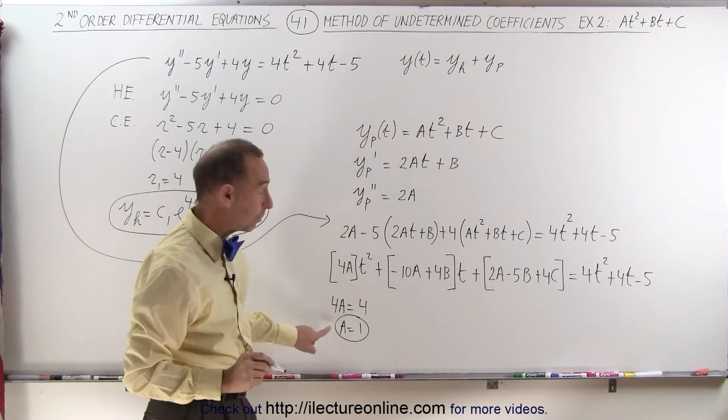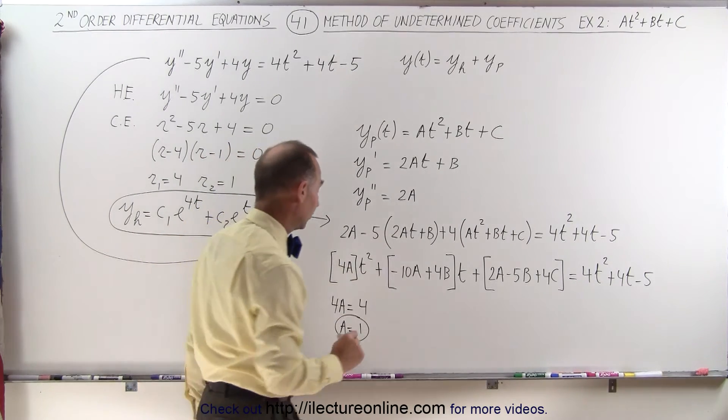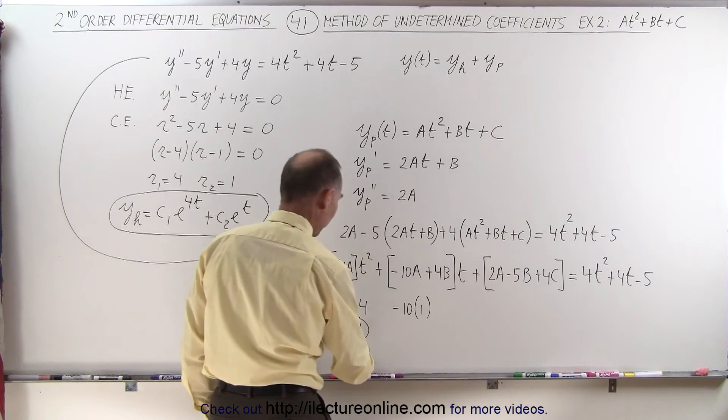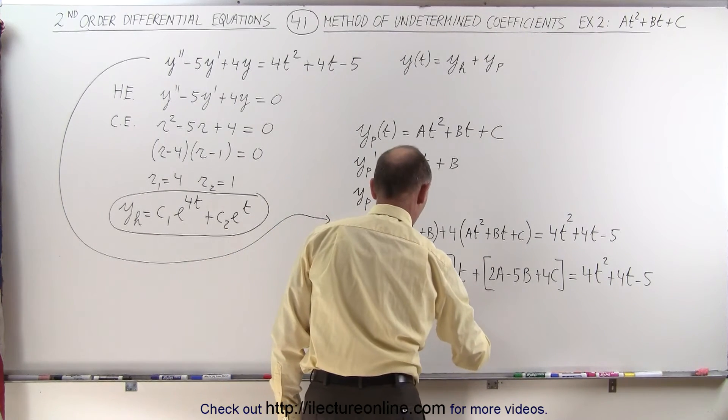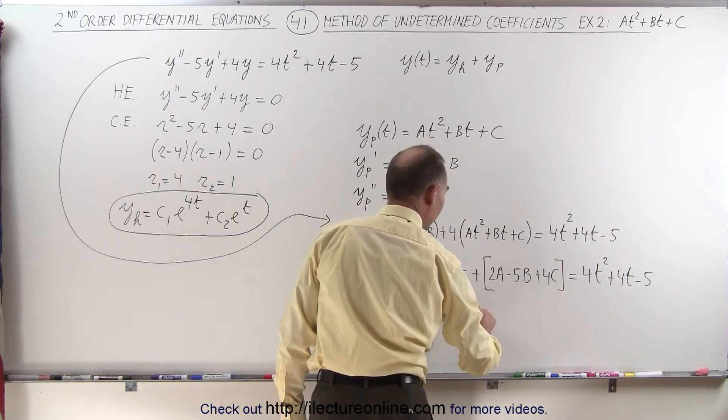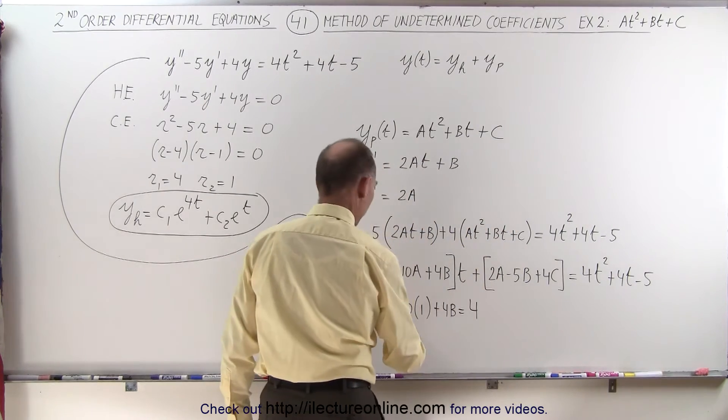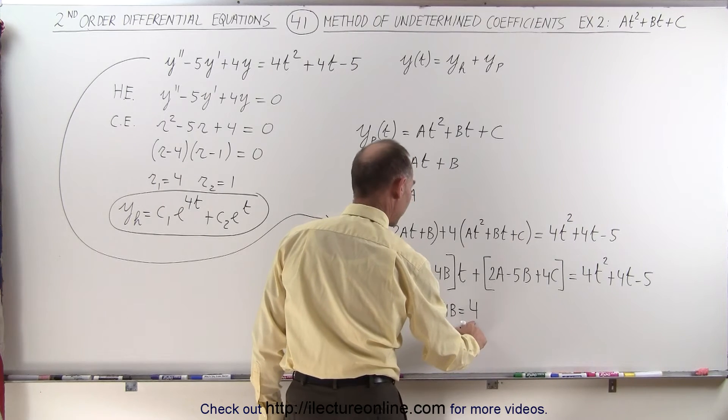So now that we know what a is, we can plug that value in here. So we can say that minus 10 times a, which is 1 from the first equation here, plus 4b is equal to this coefficient, 4. So minus 10, move to the other side, that becomes plus 14.